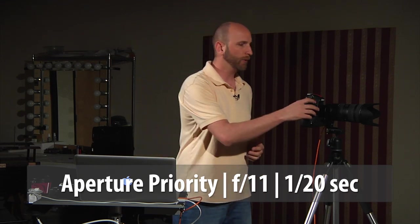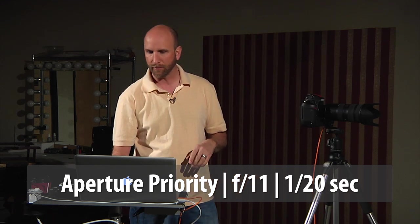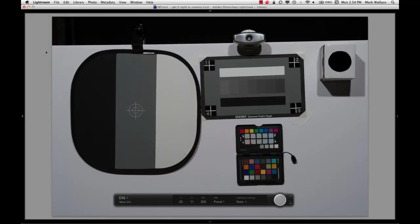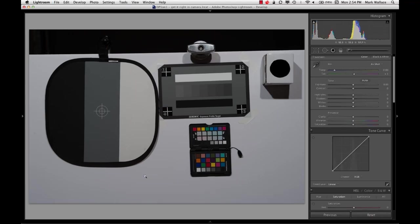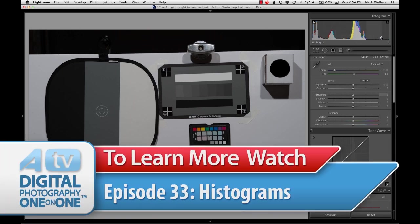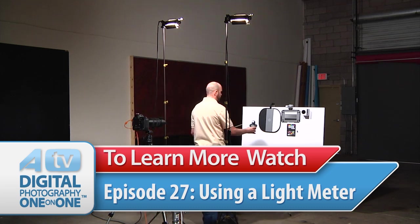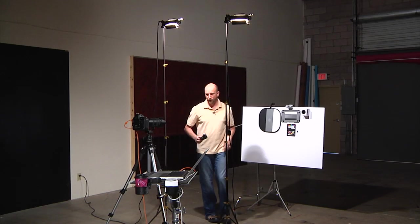Now I'm shooting right into Lightroom, tethered, so as we shoot, the pictures will come straight in and we can analyze the shots. The first thing I want to do is I have my camera set to aperture priority mode at f11, and when I meter it tells me that the shutter speed should be 1/20th of a second. So let me go ahead and take a shot. It's going to come right into Lightroom.